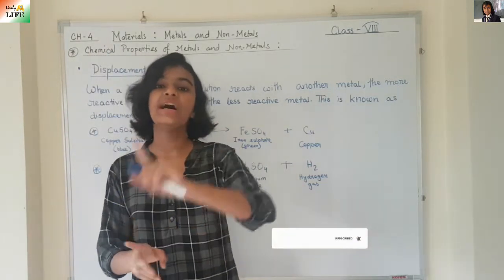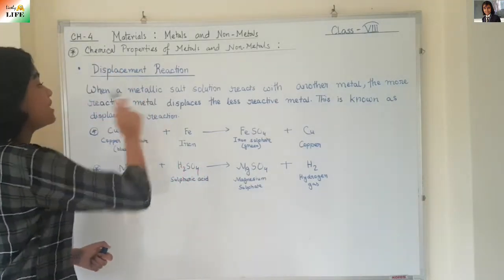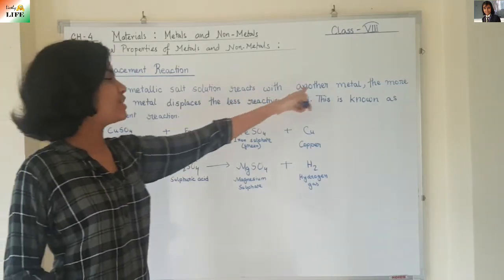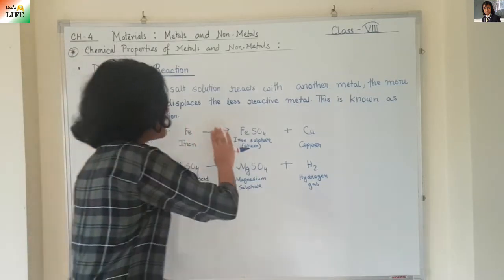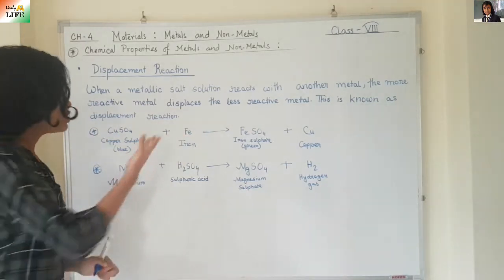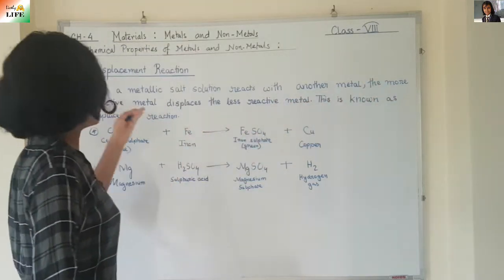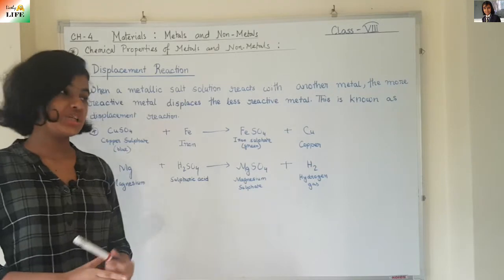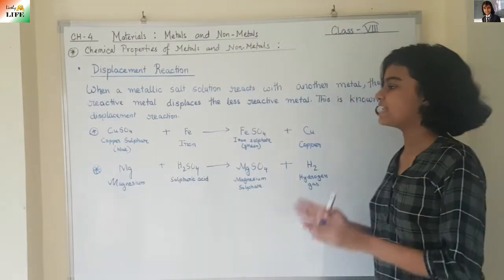Now let's read the definition again and understand it. A metallic salt solution — copper sulphate is a metallic salt solution — reacts with another metal — iron is a metal. The more reactive metal displaces the less reactive metal. Here iron is the more reactive metal and copper is the less reactive, so iron displaces copper. This type of reaction is known as displacement reaction.